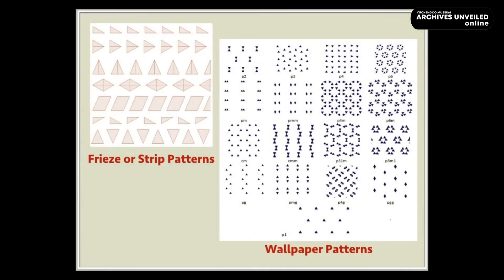All repeating patterns in one or two dimensions can be classified to belong to exactly one of these seven or 17 symmetry classes respectively. This classification distinguishes geometrically one planar pattern from another.